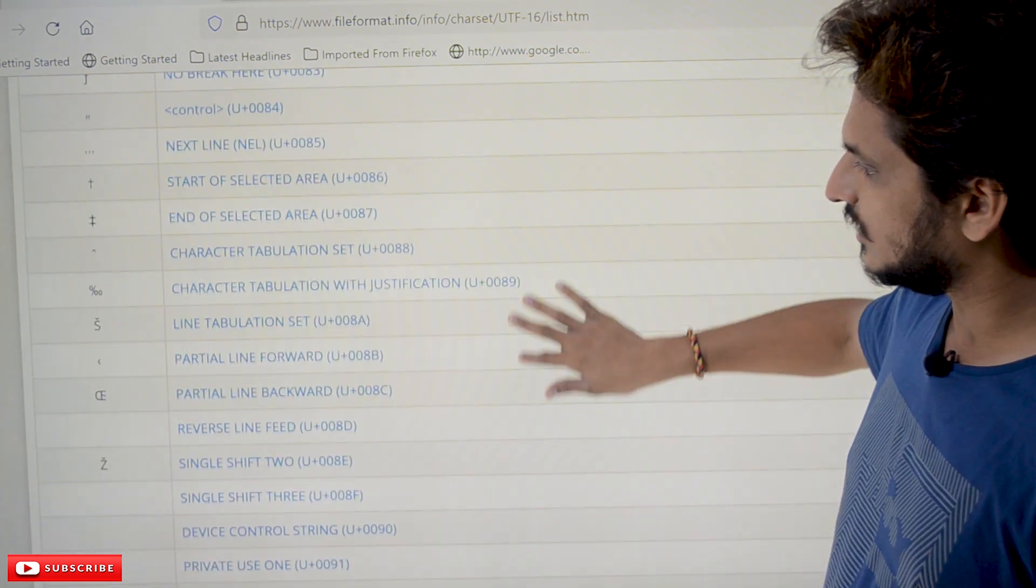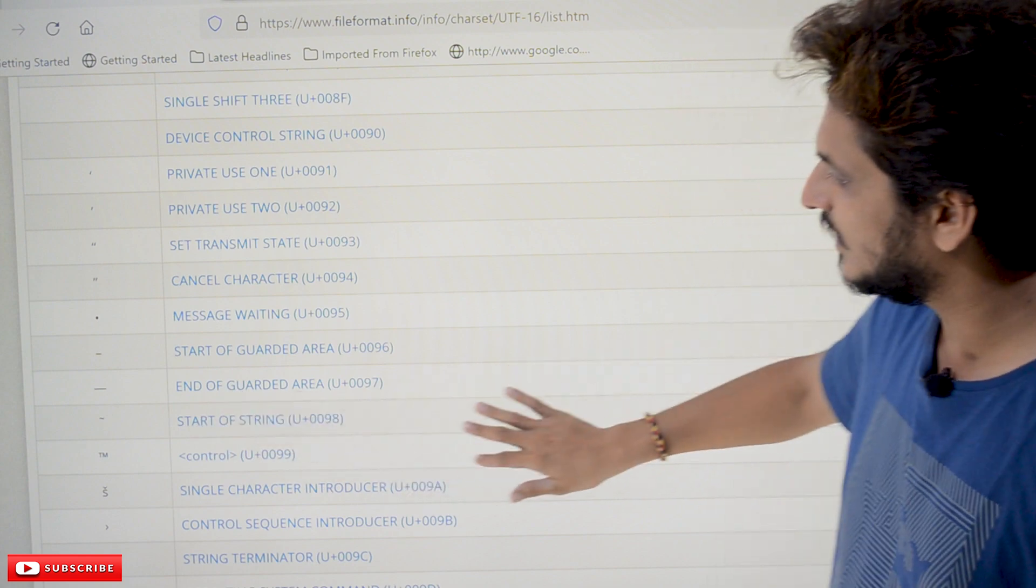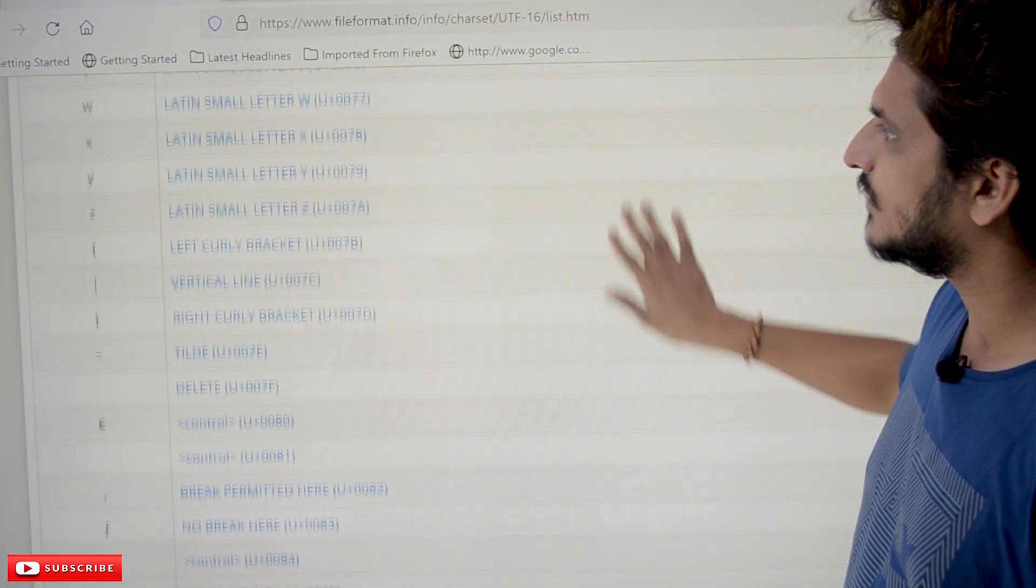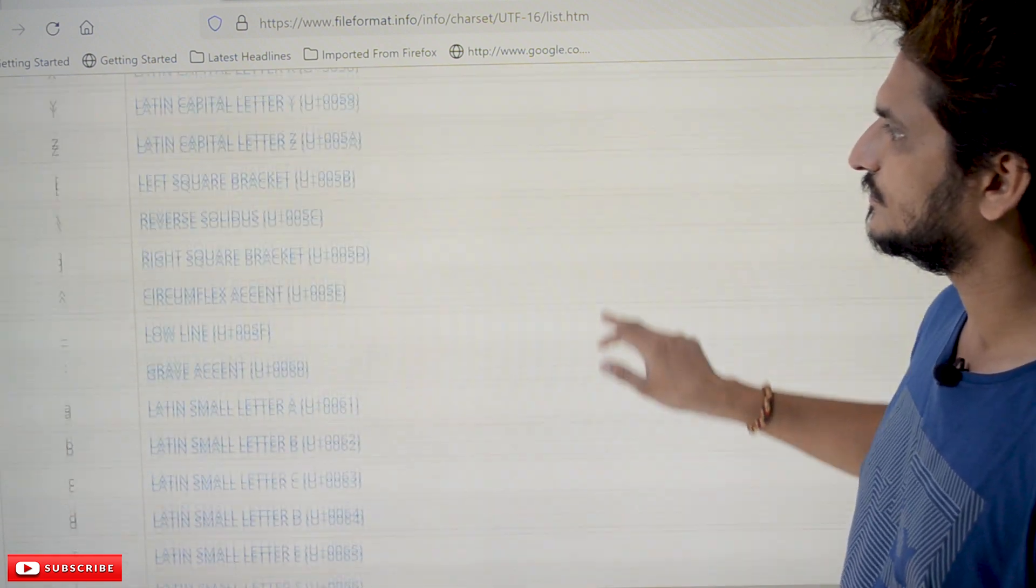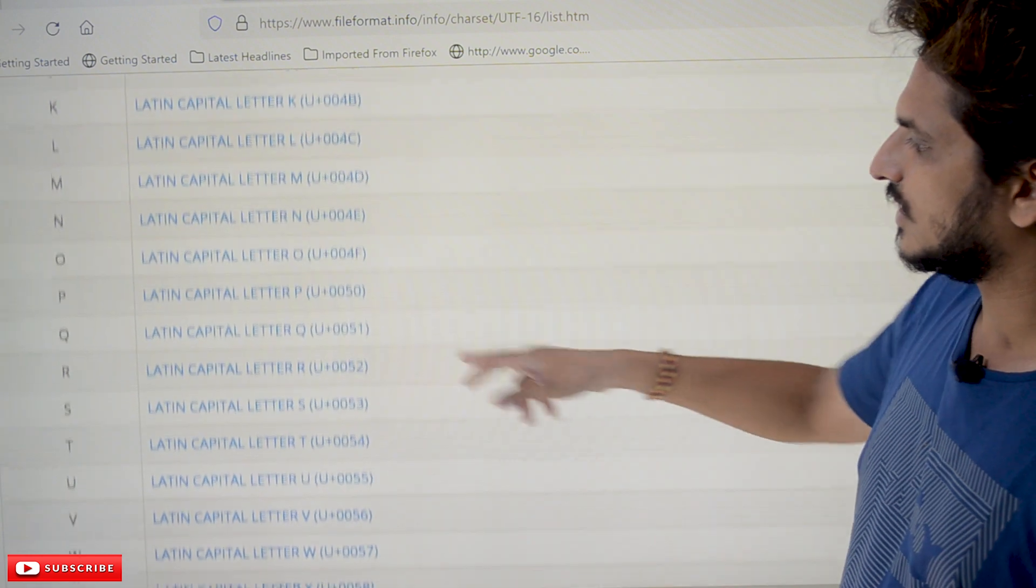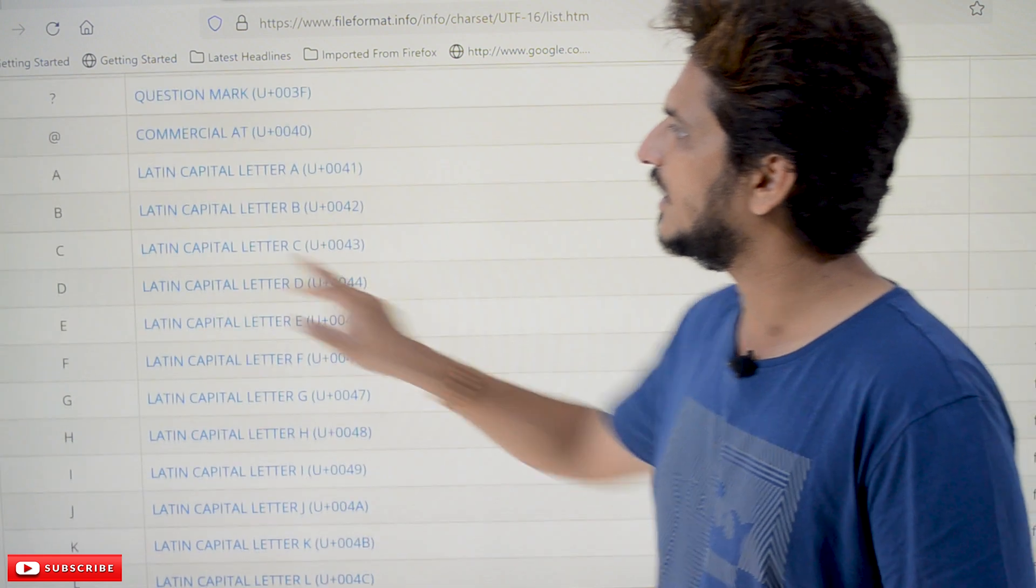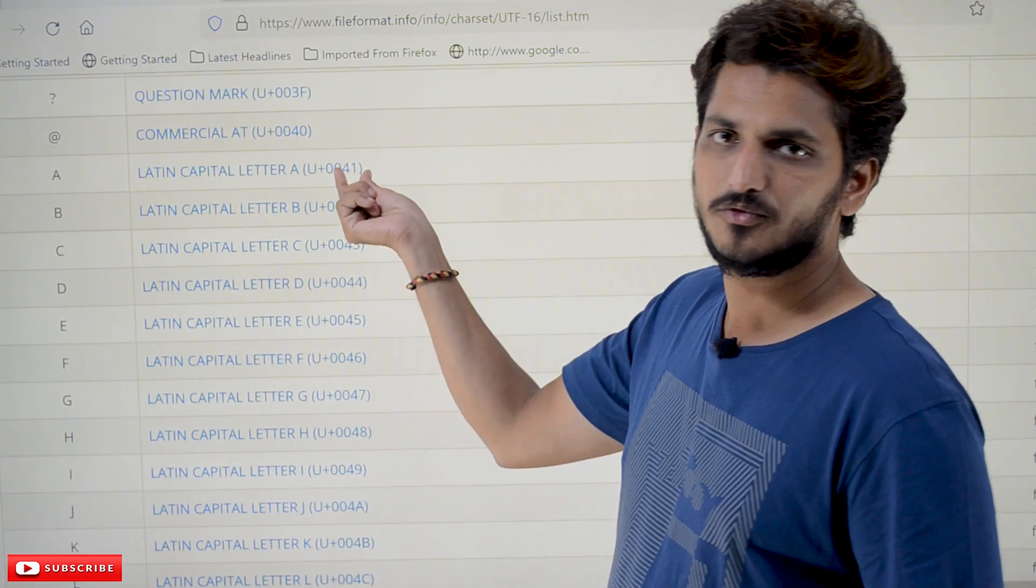Coming to this, let's try to understand few symbols. These are all the list of symbols available in our Unicode character. Not only these symbols, Latin symbols are there, so many symbols. See, Latin capital letter R. Similarly, A, capital A. What is the hexadecimal value? 0041.